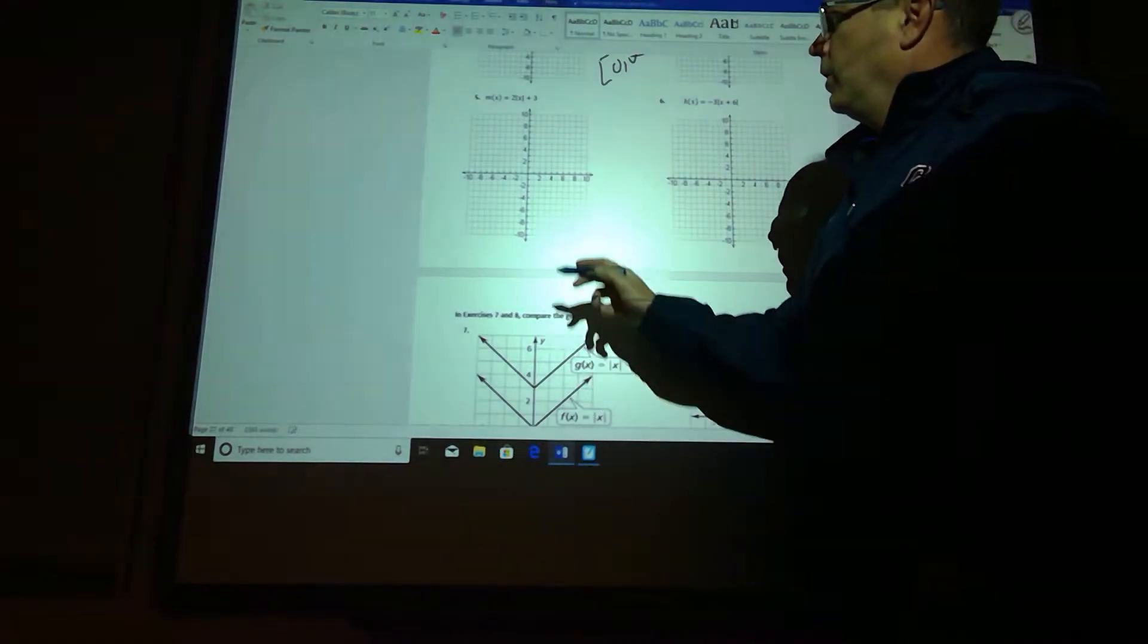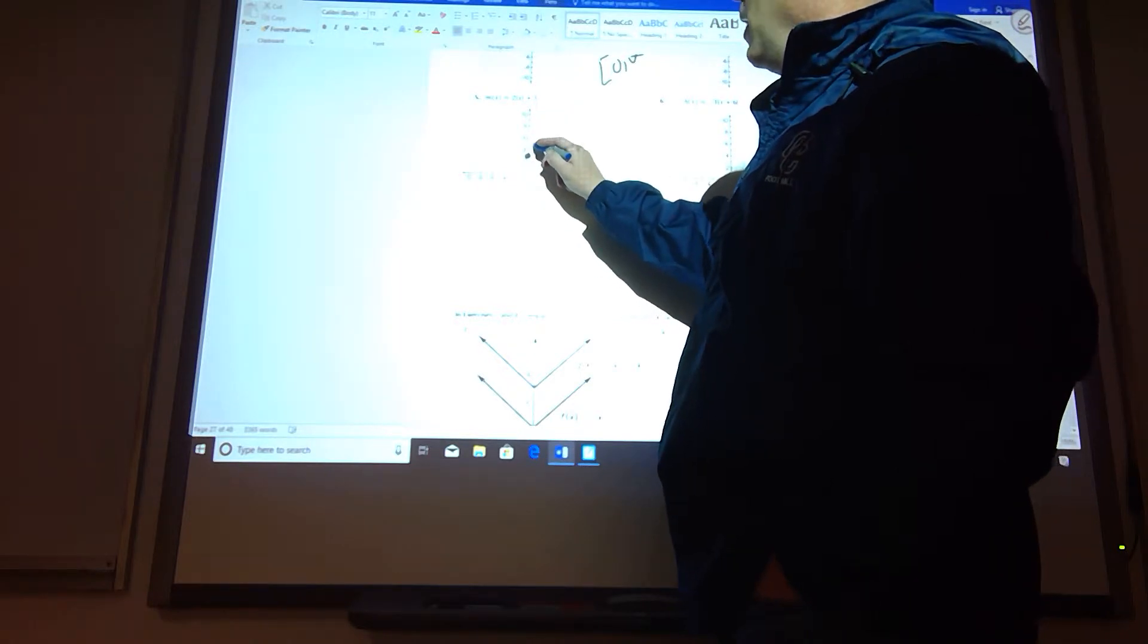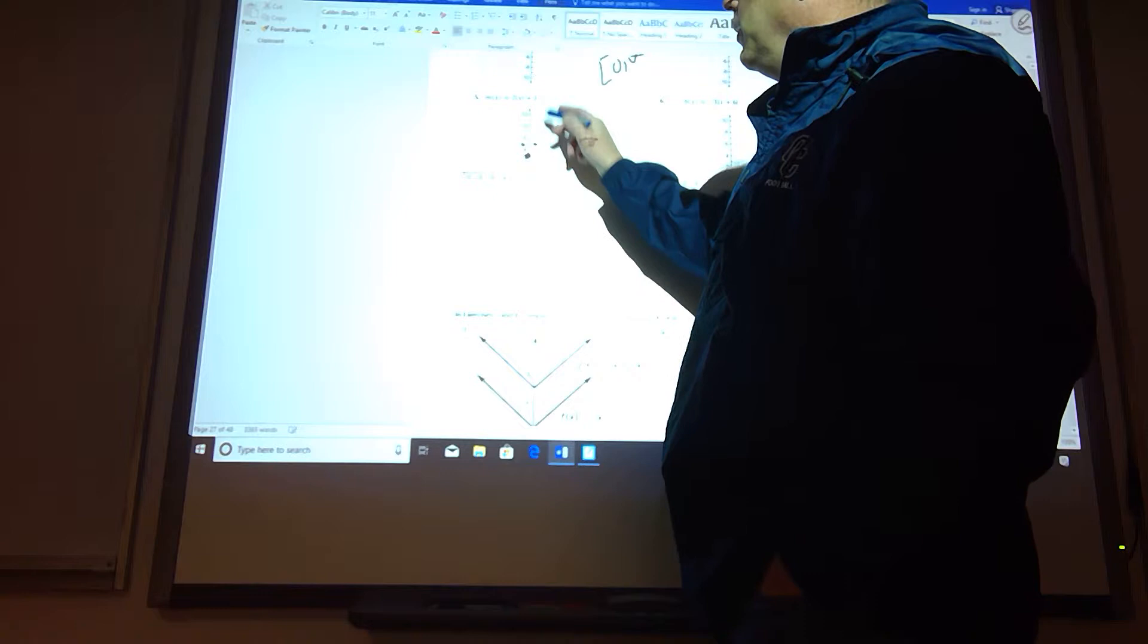Number 5 is going to start shifted up 3 because of that plus 3. It's going to go right one from that point and up 2, left one up 2, and the reason it's 2 is because there's 2 out front.